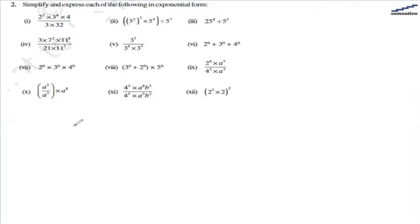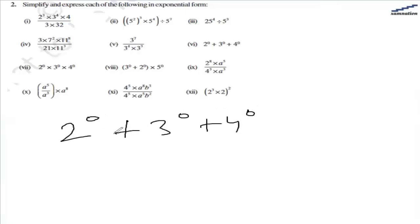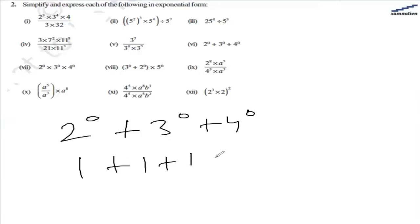In the sixth part, we have 2 raised to the power of 0 plus 3 raised to the power of 0 plus 4 raised to the power of 0. Any number — whether it is 1, 10, 1000, or 1 million — if it has the power of 0, that number equals 1. So we have 1 plus 1 plus 1, which equals 3.